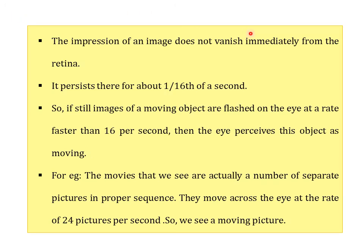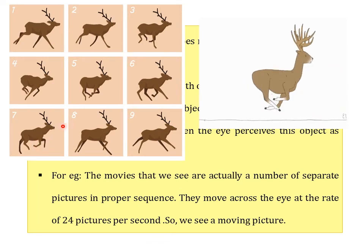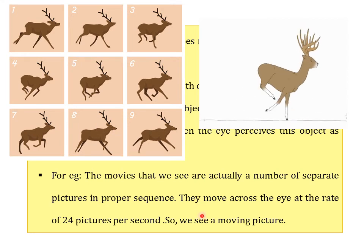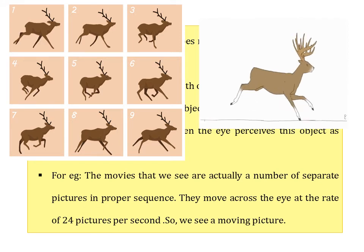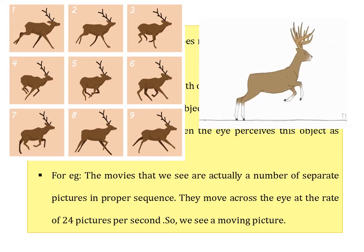The impression of an image does not vanish immediately from the retina — it stays for about 1/16th of a second. If still images of a moving object are flashed on the eye at a rate faster than 16 per second, the eye perceives the object as moving. Movies are actually a number of separate pictures in a proper sequence, shown at 24 pictures per second — faster than 16 per second — which is why we see a moving picture.